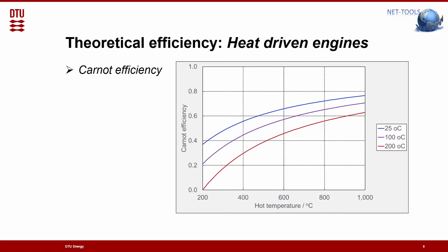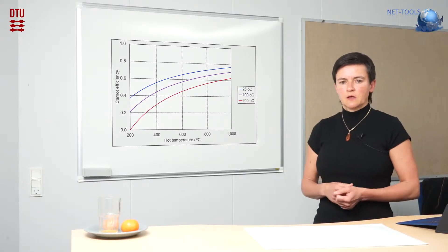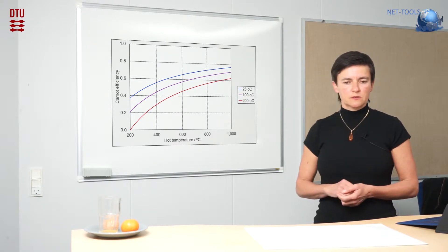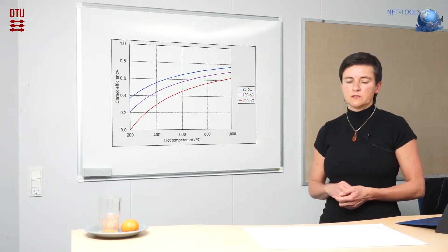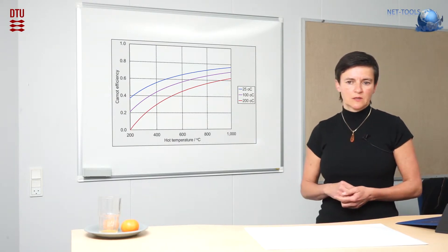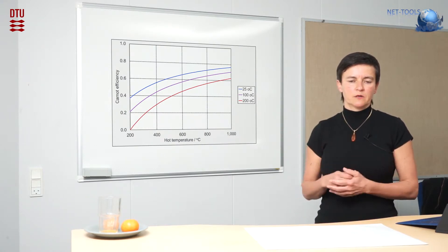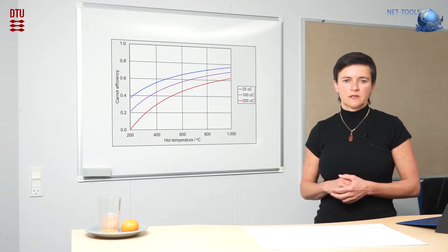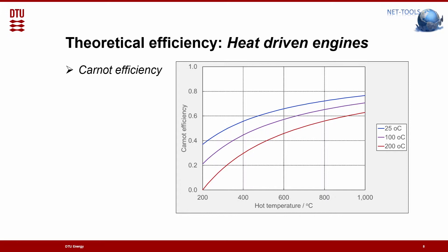What you observe is that the efficiency increases with increasing temperature, so you have to go to fairly high temperatures to achieve high efficiency. Number two, it increases the colder the cold temperature. But you have to observe that if you have a heat-driven combustion engine, you may have to cool it, which also requires energy to reach temperatures as low as 25 degrees centigrade. So what you learn is high temperatures are preferred in heat-driven engines and low cold temperatures are preferred.